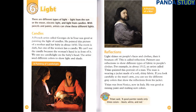Reflections. Light shines on people's faces and clothes, then it bounces off. This is called reflection. Painters use reflections to show different types of fabric in people's clothes. For example, in about 1512, an artist called Titian painted this portrait of a man. The man is wearing a jacket made of a soft, shiny fabric. If you look carefully at the man's arm, you can see the different gray colors that show the reflections from his jacket. Titian was from Venice, now in Italy. He was good at mixing paint and making new colors.